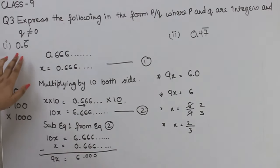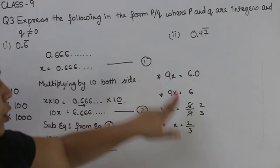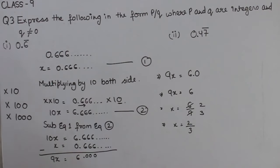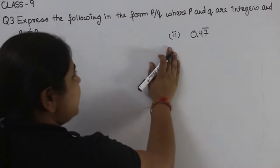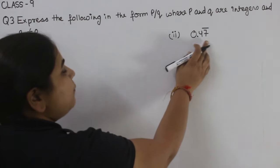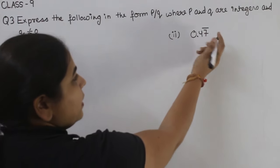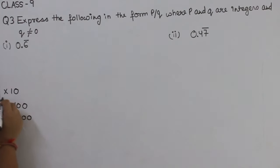So x is equal to 6 by 9, which simplifies to 2 by 3. The value of 0.6 bar in P by Q form is 2 by 3. Now for the second part, 0.47 with a bar only on the 7.